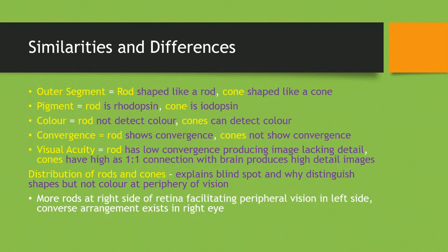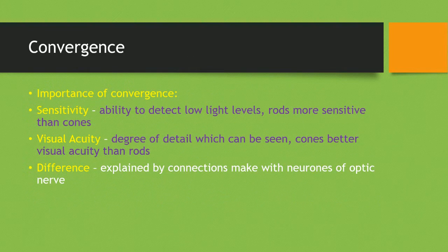There are some similarities and differences between rods and cones. The outer segment of a rod is shaped like a rod and a cone is shaped like a cone. The pigment of a rod is rhodopsin while the cone's is iodopsin. Rods do not detect colour while cones can. Rods show convergence and cones do not. In visual accuracy, rods have low convergence producing an image that lacks detail, but cones have a one-to-one connection with the brain producing high detailed images. The distribution of rods and cones explains the blind spot and why you can distinguish shapes but not colour at peripheral vision — there are more rods at the right side of the retina facilitating peripheral vision in the left side, with a converse arrangement in the right eye and vice versa for the left.